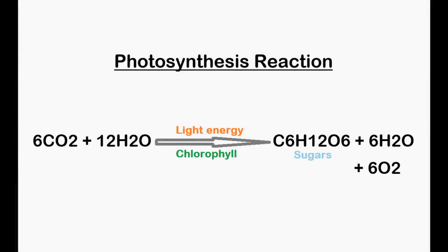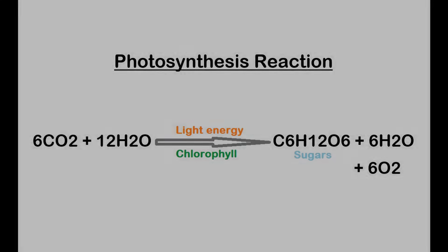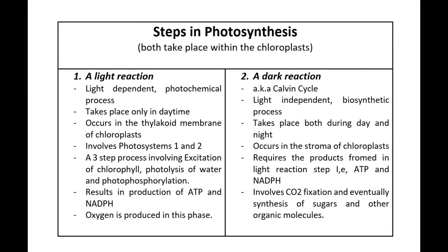Gaseous oxygen is a major byproduct of the process of photosynthesis. The chemical reactions that take place in this process may be summarized as follows. Photosynthesis occurs in two major steps, both of which take place within the chloroplasts: a light reaction and a dark reaction.